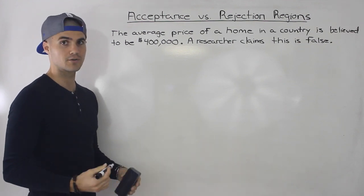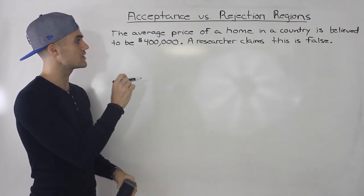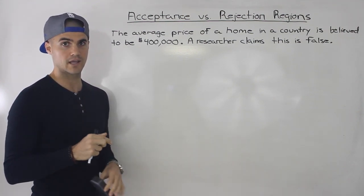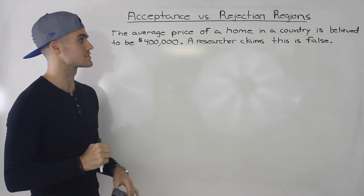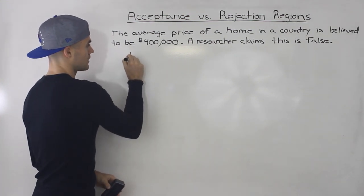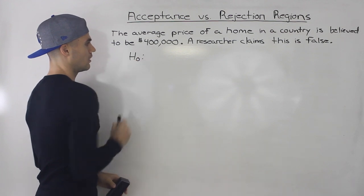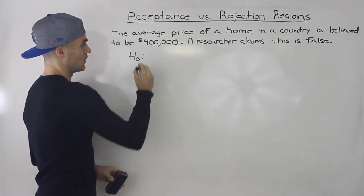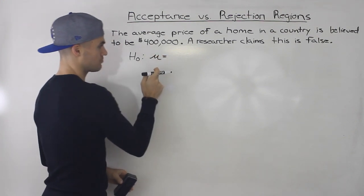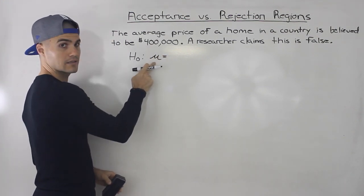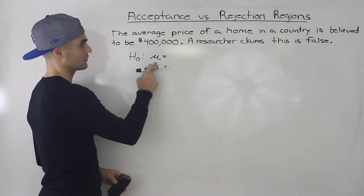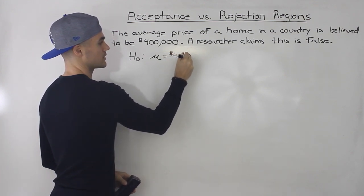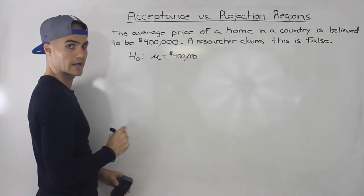I want to introduce a scenario here. Let's say that the average price of a home in a country is believed to be $400,000, and a researcher comes along and claims that this is false. So what is the null hypothesis — the accepted truth so far? Well, that the average price of a home, characterized by mu, is $400,000 in the population.